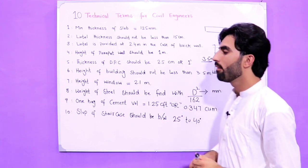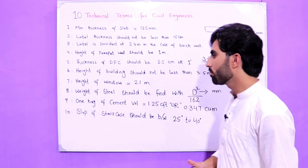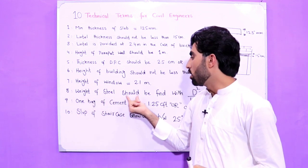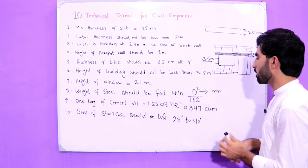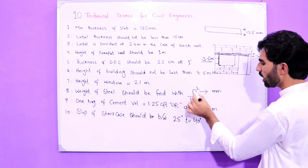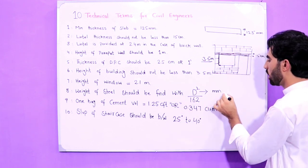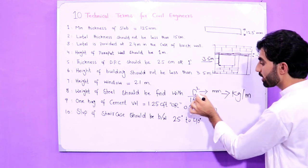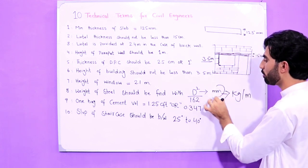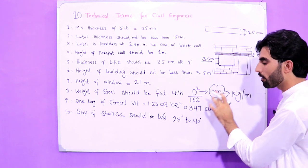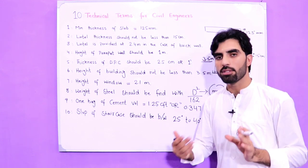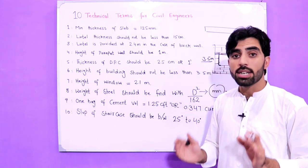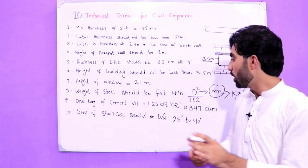Now guys, the eighth one is weight of steel should be found with the given formula: D² divided by 162, which can give us the weight of steel in kg per meter. But the diameter of the steel bar should be in millimeters. You can find weight of steel if the diameter of steel is 12 millimeter, 10 millimeter, any sort of diameter should be included here, by which we can find weight of steel in kg per meter.